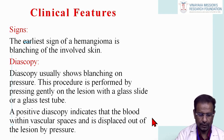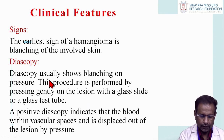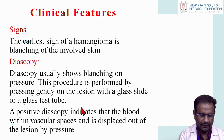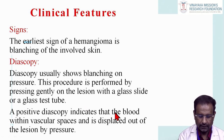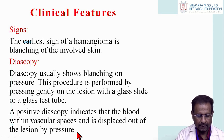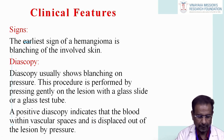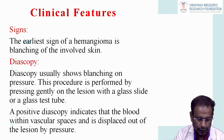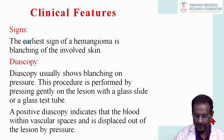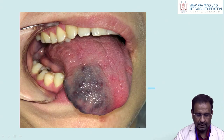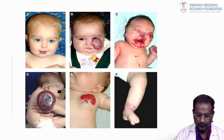Diascopy is one investigation procedure for hemangioma. It shows blanching on pressure, performed by pressing gently on the lesion with a glass slide or test tube. Positive diascopy indicates that blood within the vascular spaces is displaced out of the lesion by pressure — the red color disappears when pressure is applied and reappears when the glass is removed. That is the diascopic procedure, an important diagnostic tool. This picture shows an example of hemangioma of the tongue in a young child.